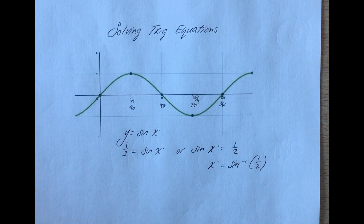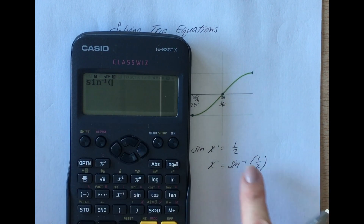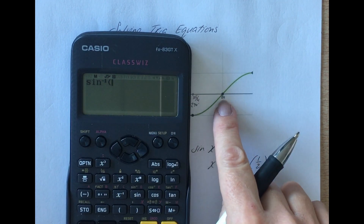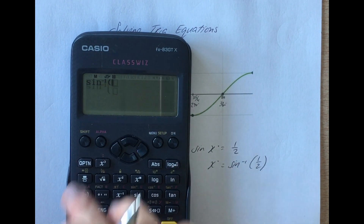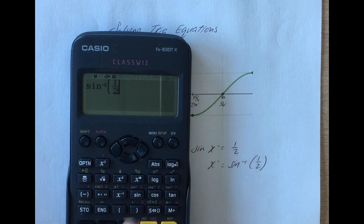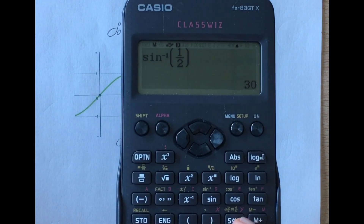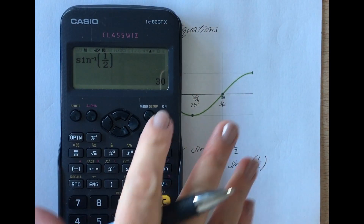Always make sure that your calculator is in degrees if you're dealing with degrees. If you want to give your answer in radians, make sure your calculator is in radians. I'm going to deal with degrees — I much prefer to work with degrees, and if I need to give an answer in radians, I do that conversion at the end. Sine inverse of a half gives me, of course, 30 degrees.